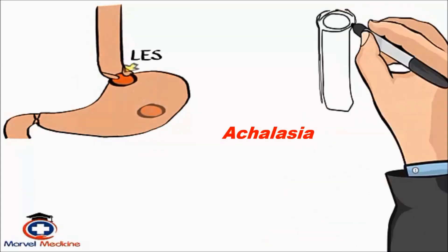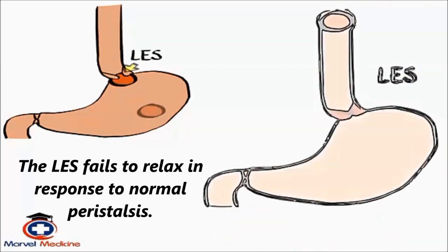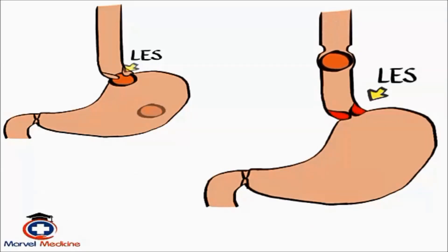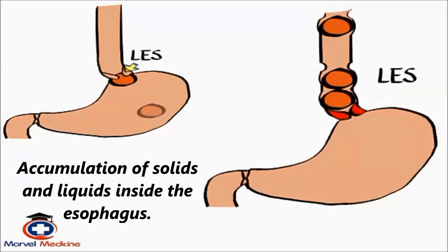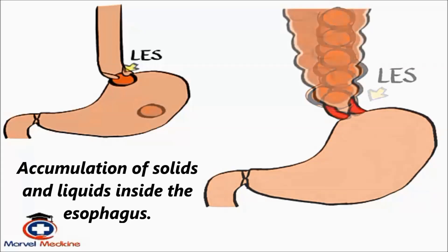What happens in achalasia is that the lower esophageal sphincter fails to relax in response to normal peristalsis. You can probably predict the first complication of achalasia, which is accumulation of solids and liquids inside the esophagus, and dysphagia.